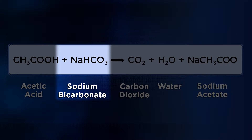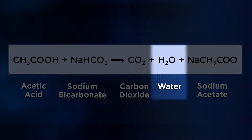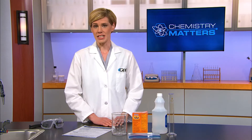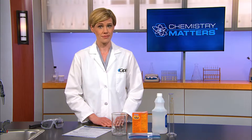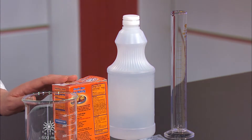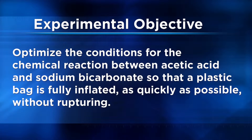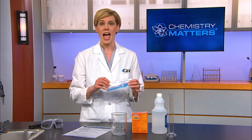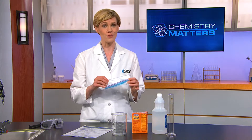We're going to investigate the suitability of an alternate chemical reaction for use in an airbag, so that we don't have to handle toxic chemicals. Acetic acid reacts with sodium bicarbonate to produce carbon dioxide gas, water, and sodium acetate. These reactants are safe to use and easily obtained at a grocery store. Acetic acid is present in vinegar at a 5% concentration by mass, and sodium bicarbonate is simply baking soda. Your goal is to optimize the conditions for the reaction between acetic acid and sodium bicarbonate so that a plastic bag is fully inflated as quickly as possible without rupturing.